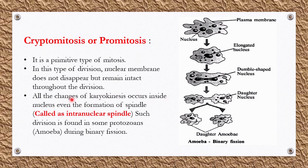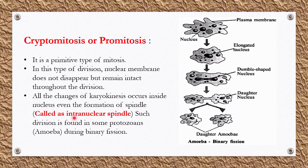This is the major difference between mitosis and cryptomitosis: all the changes of karyokinesis occur inside the nucleus only. During karyokinesis, the nucleus divides into two. Even the formation of spindle fiber — which in normal mitosis occurs inside the cytoplasm — here occurs inside the nucleus. Such formation of spindle fiber inside the nucleus is called intranuclear spindle formation.